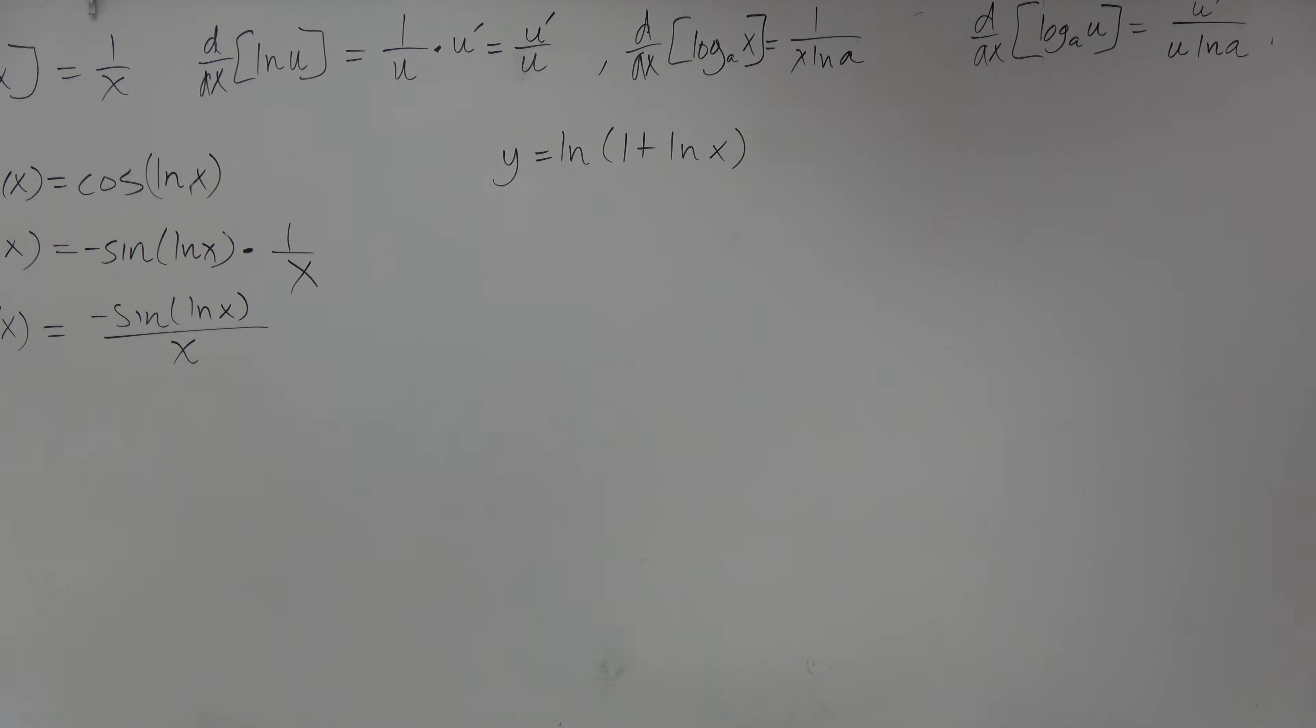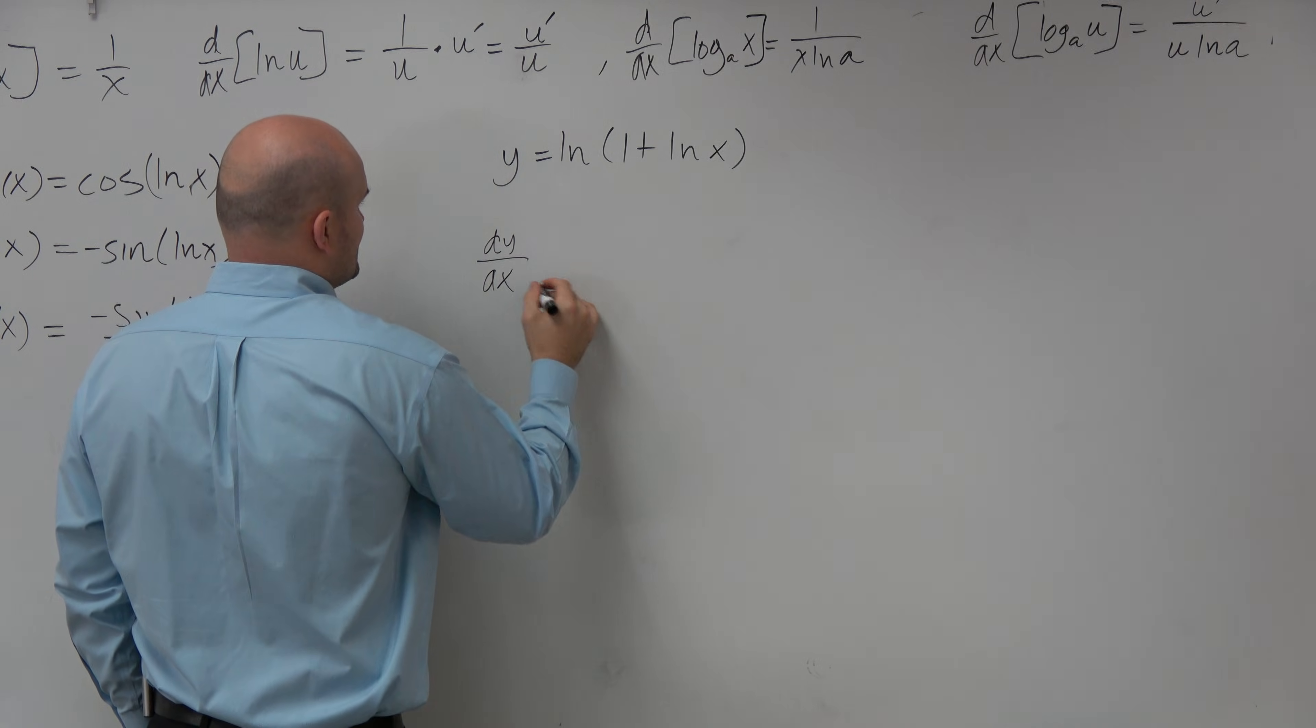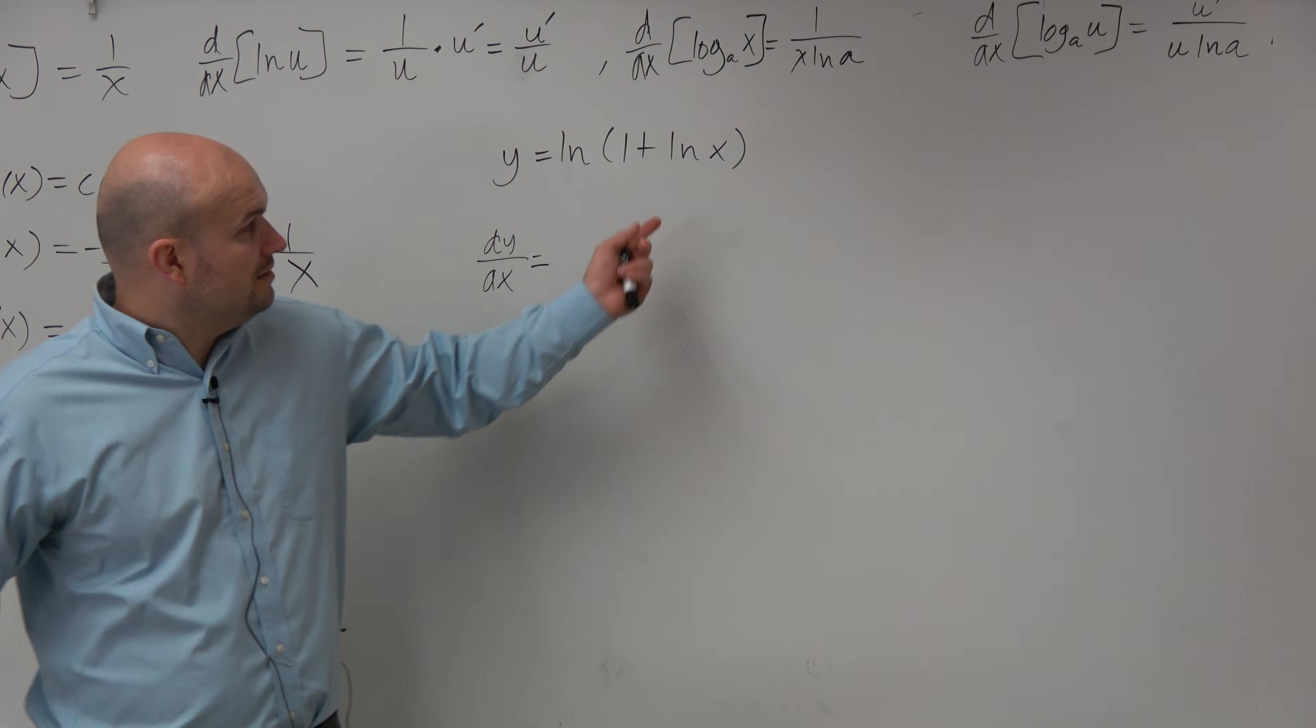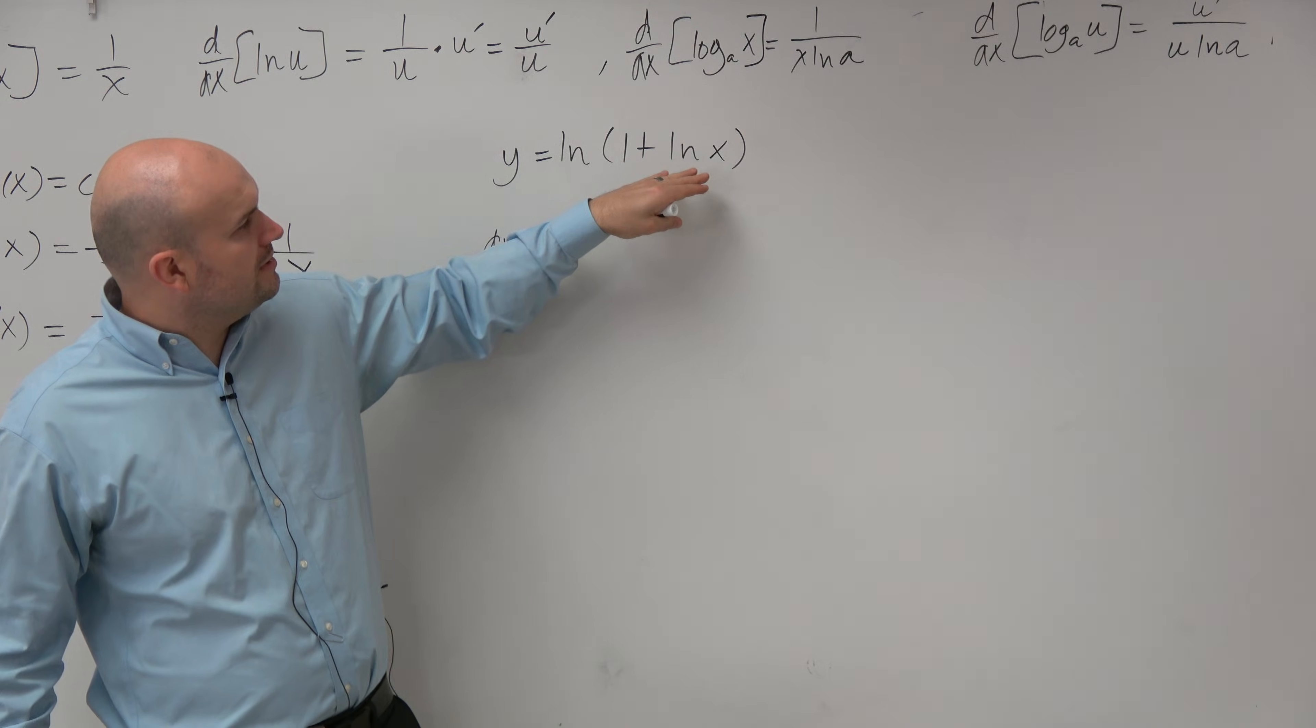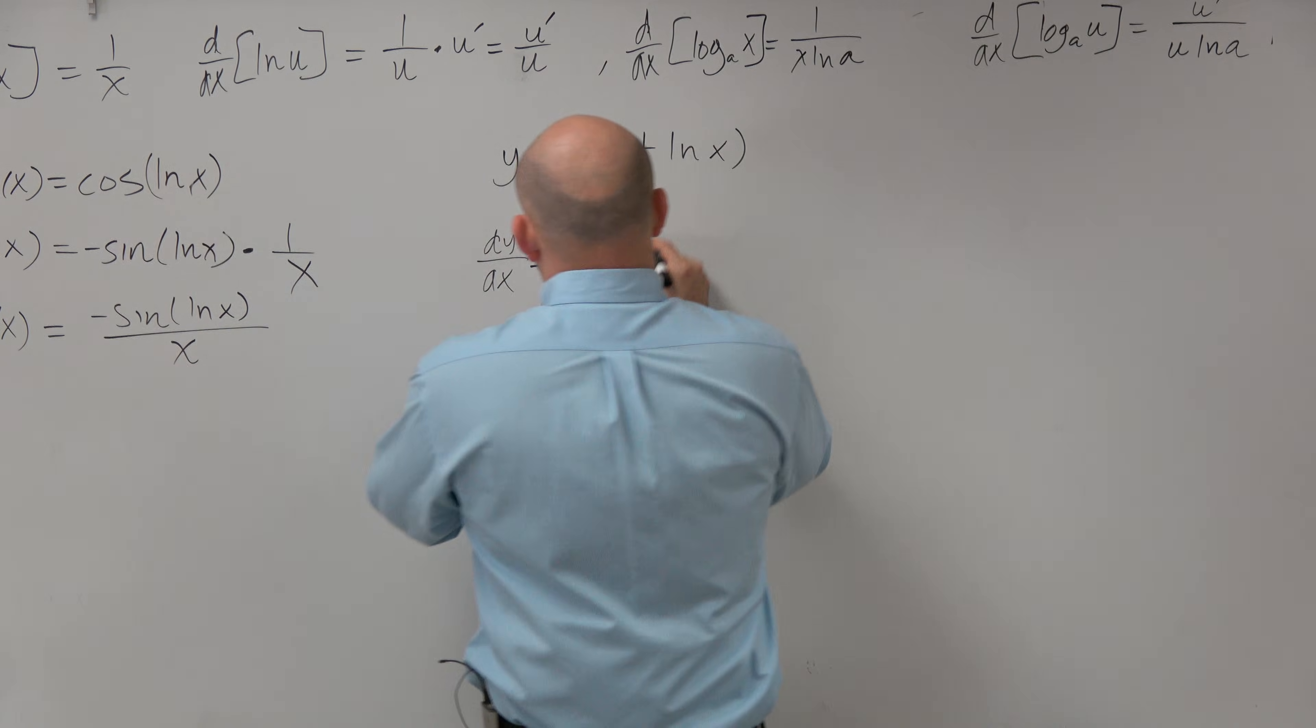The next one you can see is kind of like another chain rule. So automatically looking into this, dy over dx, if I want to find the derivative here,